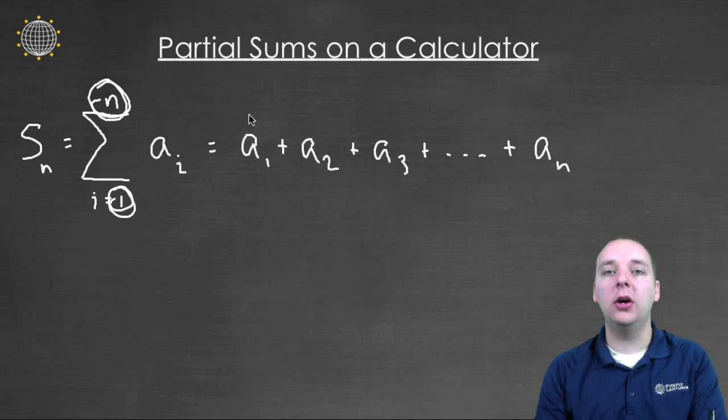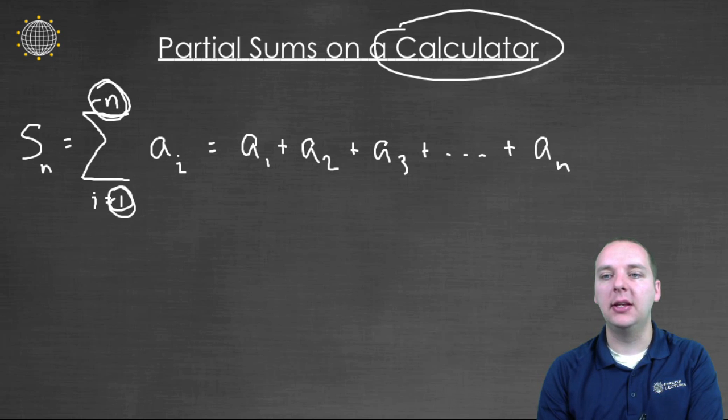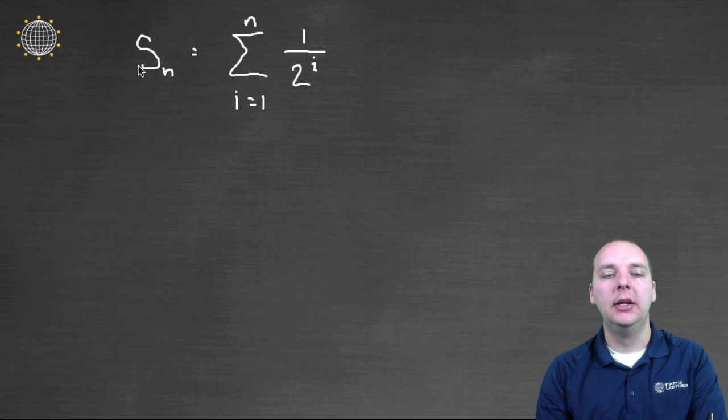But if they're much larger, then we might need to look at how we can do these on a calculator. So let's say you have S sub n, for example, equals the sum 1 to n of 1 over 2 to the i. So this is a pretty typical partial sum.